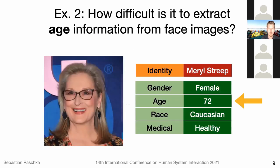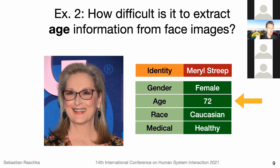Regarding age — another example. This sounds like a more challenging problem, because even for humans it's kind of challenging to tell how old a person really is just by looking at them. I would probably be off by at least 10 years. But for deep learning systems, it's also something that can relatively easily be solved.